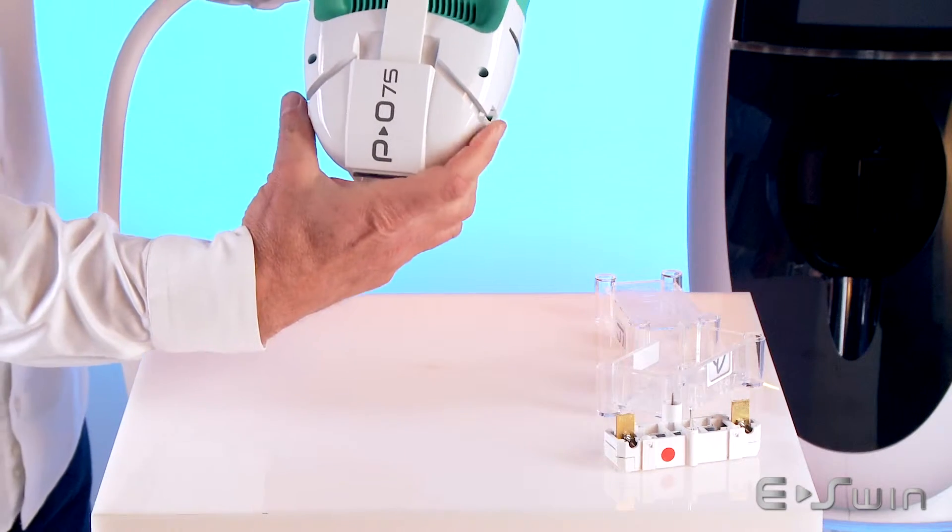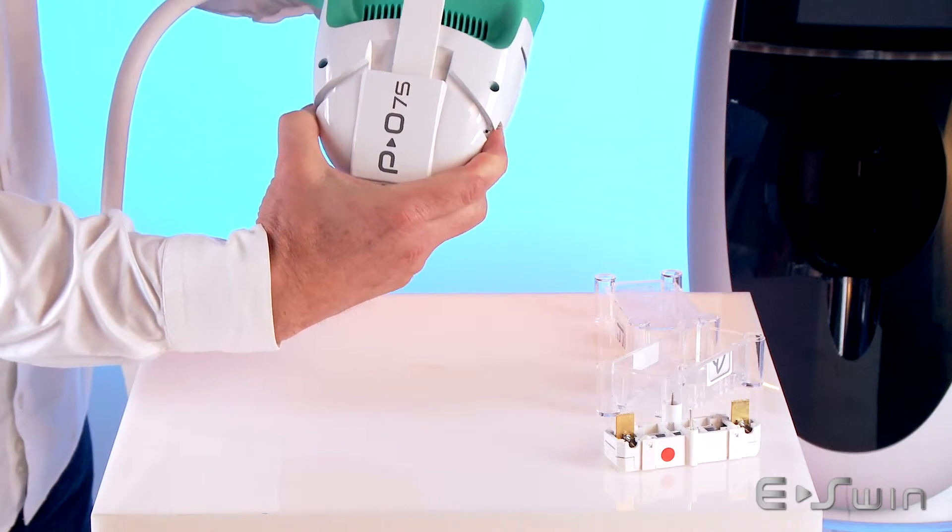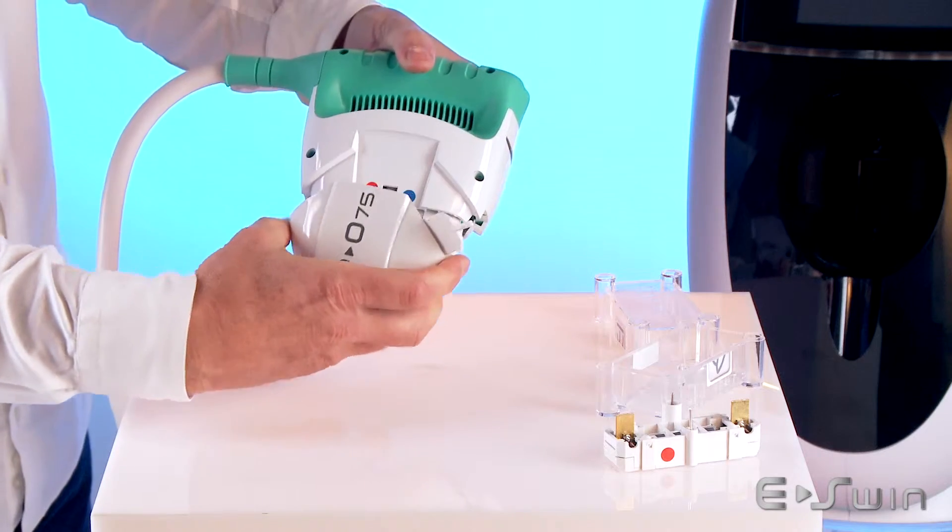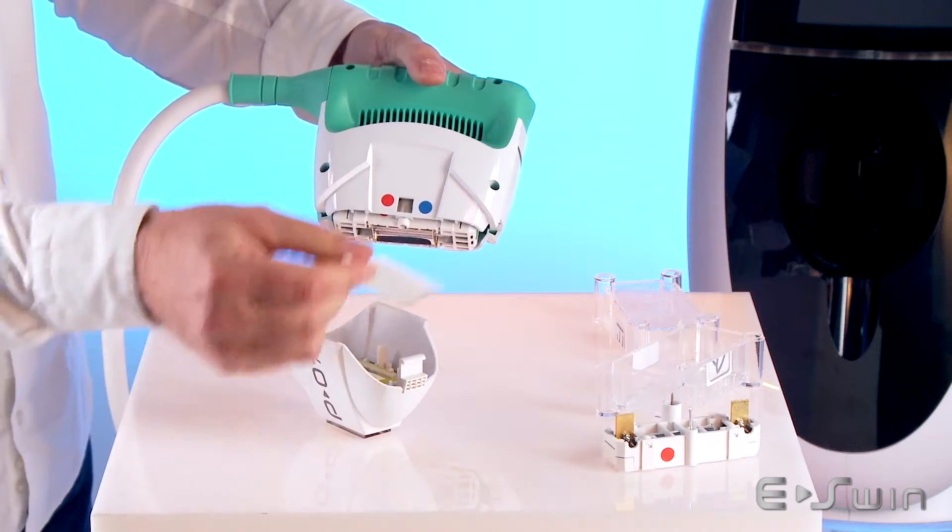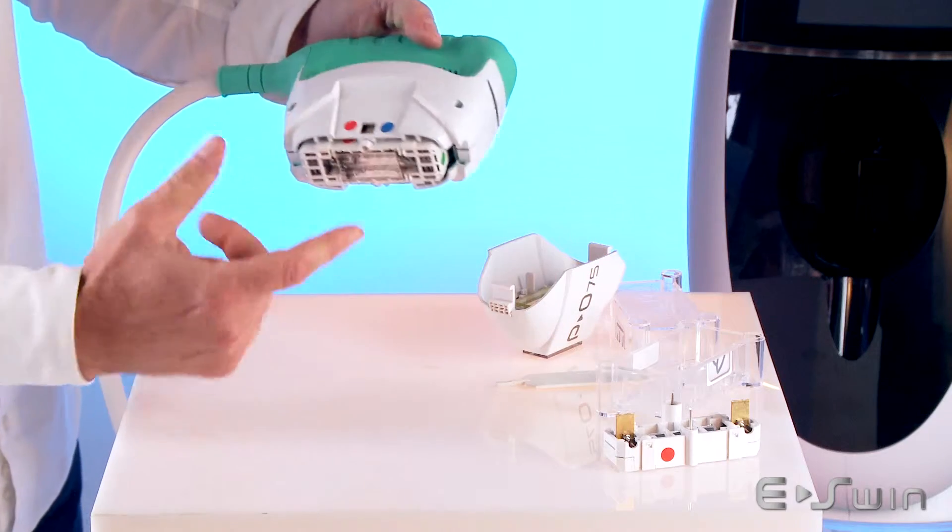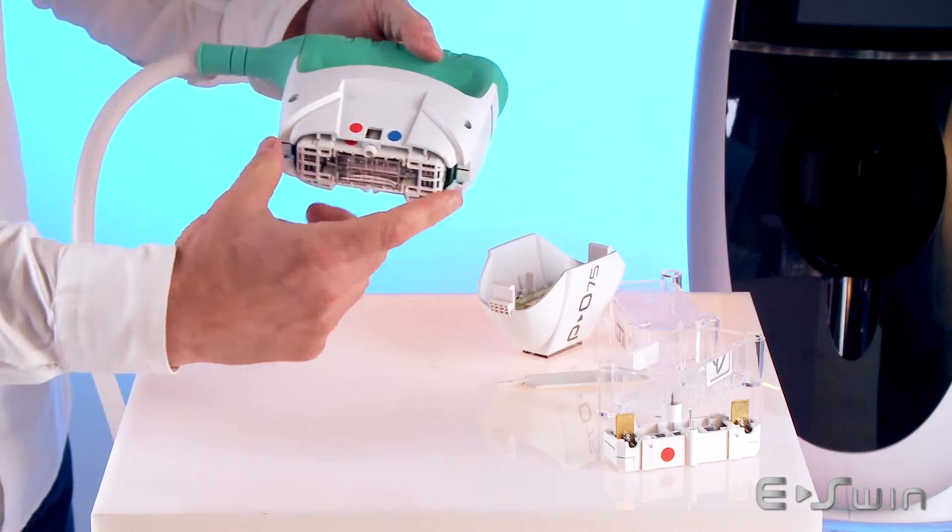Press simultaneously on the two locking tabs that hold the mobile head and remove the mobile head. Hold the cartridge at both ends and carefully take it off.